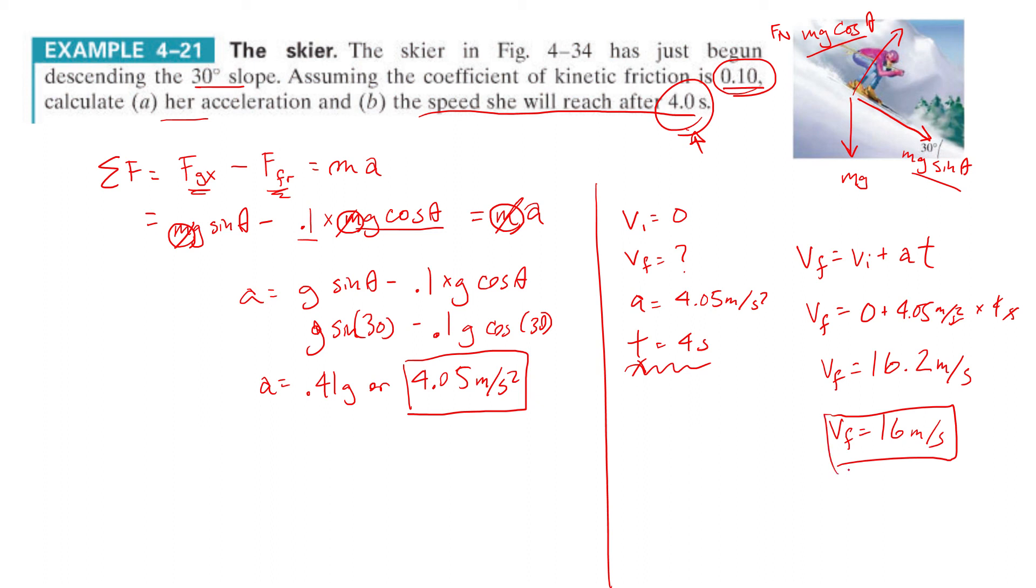Awesome. So, trickiest thing about this question is number one, you gotta know that along the surface, it's mg sine theta. The normal force is mg cosine theta. Just know that. And then number two, know that the masses will cancel. And that should have gotten you through the problem. I hope that helps. Thanks a lot for being such a patient student. I really love how you're working so hard. Thank you. Thank you. Thank you.